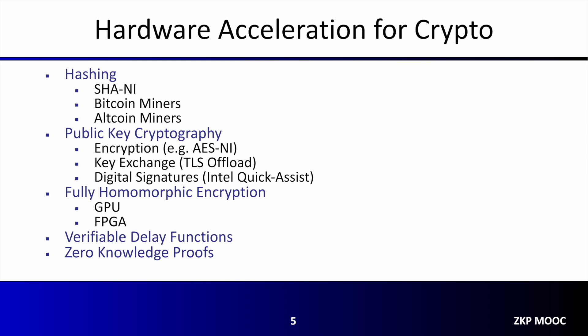While hashing and public key cryptography have been long-standing targets for acceleration, in recent years there has been a tremendous amount of focus on new cryptographic primitives beginning to come into the realm of practicality. These include techniques such as fully homomorphic encryption, verifiable delay functions, as well as today's topic — zero-knowledge proofs.